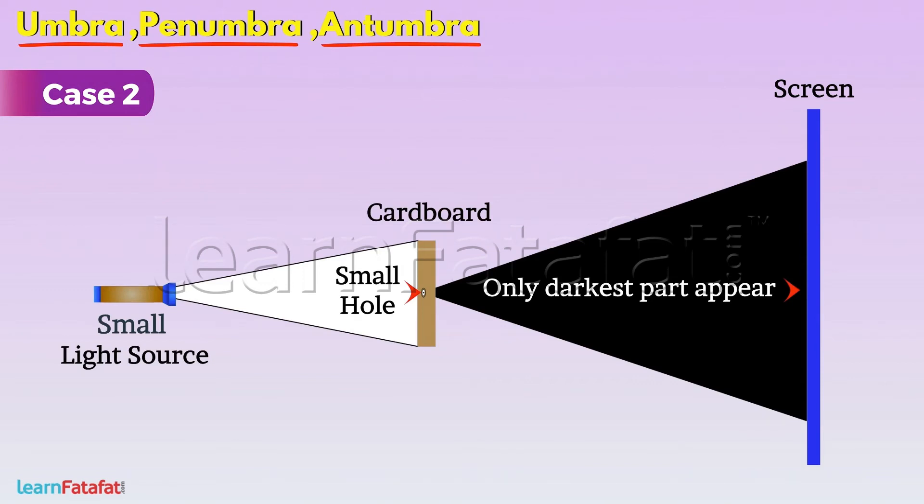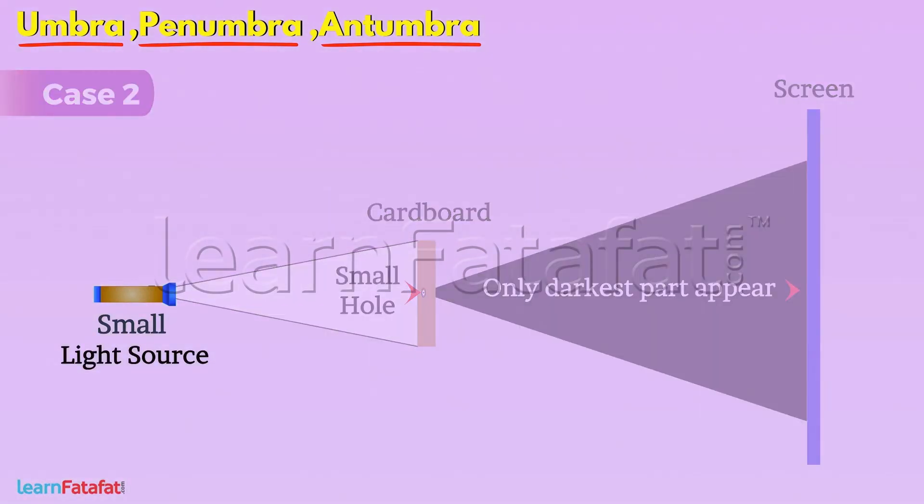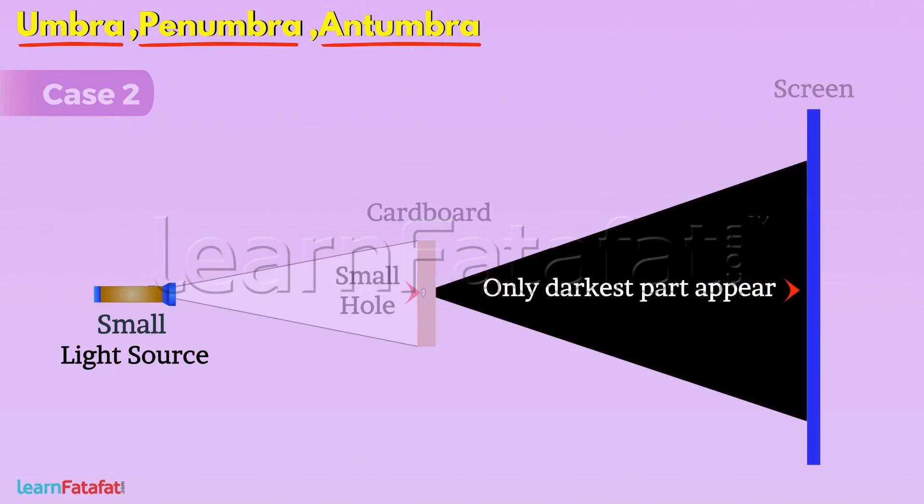In this case, only the darkest part appear on the screen. That means, for very small source than object, the shadow has only Umbra.